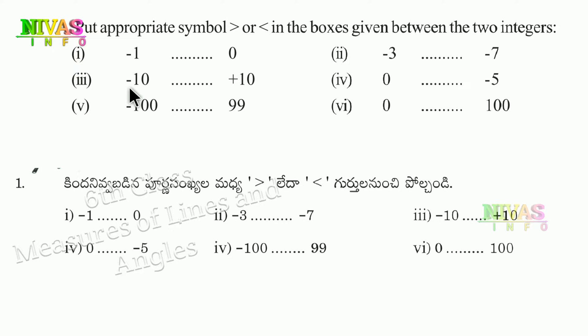Let me explain the symbols. The greater than symbol means the left side number is bigger — the greater number is on the left side. The less than symbol means the left side number is smaller — the smaller number is on the left side. So greater than has the bigger number on the left, and less than has the smaller number on the left.